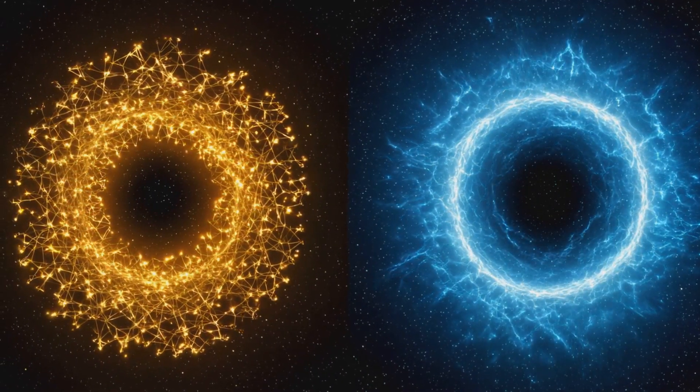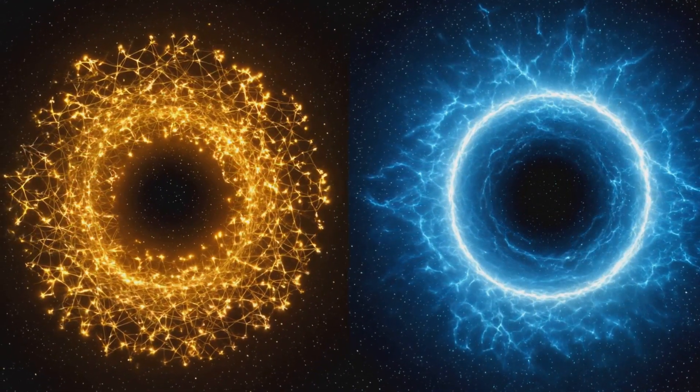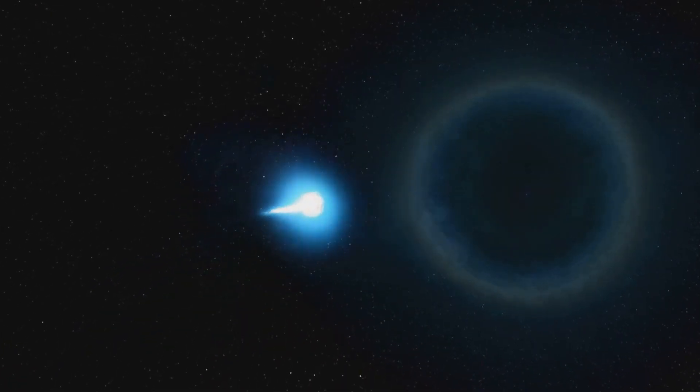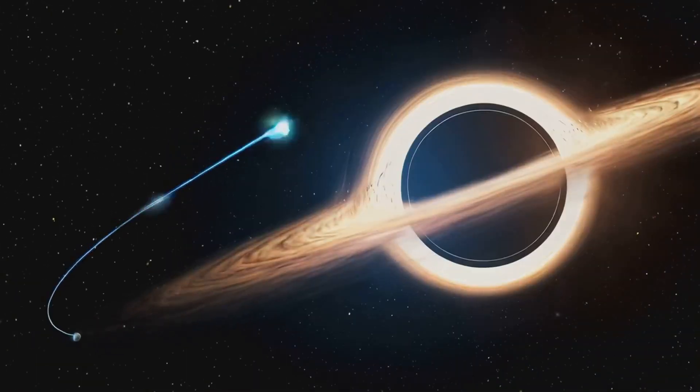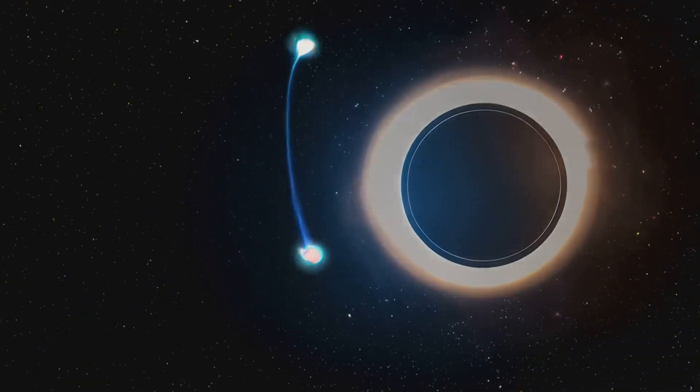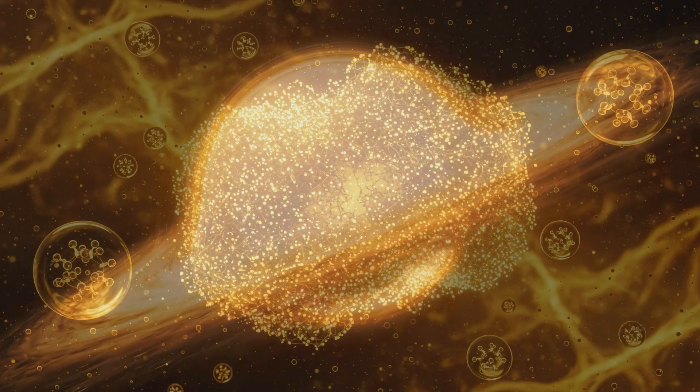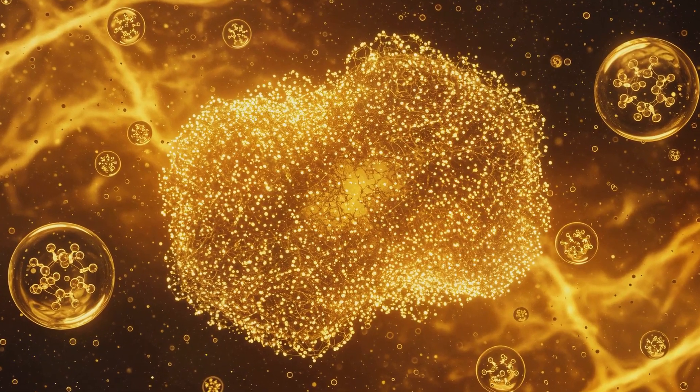Every qubit on the event horizon is entangled with a corresponding qubit in the singularity. When a particle falls into a black hole, it interacts with the qubits in the singularity. This interaction changes the quantum state of the singularity's qubits, which is instantly mirrored on the event horizon through entanglement.